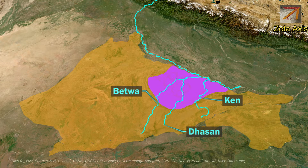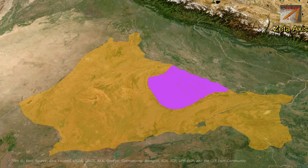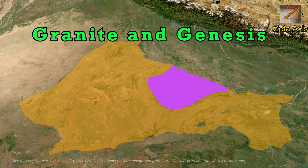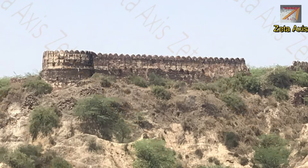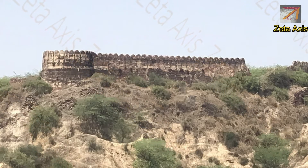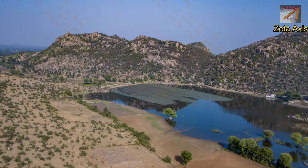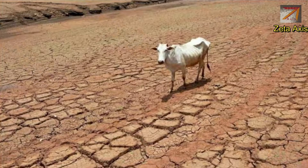The Bundelkhand Plateau has a senile topography, meaning it is an old structure that has undergone prolonged erosion. Large-scale erosion has divided the plateau into a chain of small hills of granite and sandstone. Due to heavy erosion, the region has become unfit for cultivation.